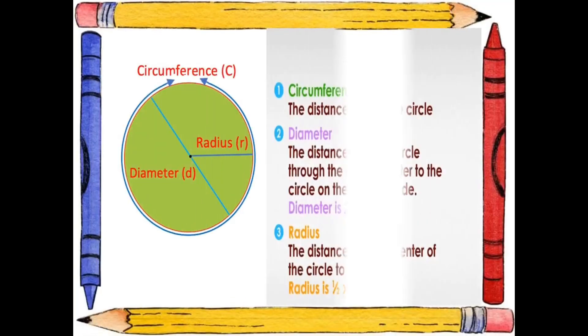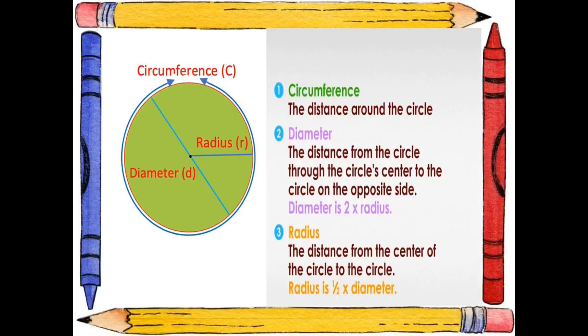Circumference is the distance around the circle and is also known as the perimeter of the circle. Diameter is the distance from one side of the circle through the center to the opposite side, and diameter is double the radius — that means diameter equals 2 multiplied by radius. Radius is the distance from the center of the circle to the circle, and radius is half of diameter, meaning radius equals diameter divided by 2.